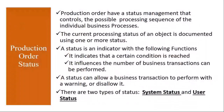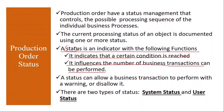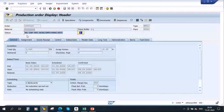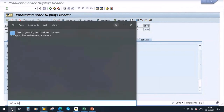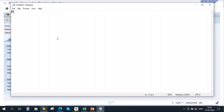A status is an indicator with the following functions: it indicates that a certain condition is reached — that means the production order has reached a particular condition. It also influences the number of business transactions that can be performed, meaning the status will control what other transactions can be carried out. For example, if the order is not released, you cannot carry out further activities. In our flow, first the production order is created.